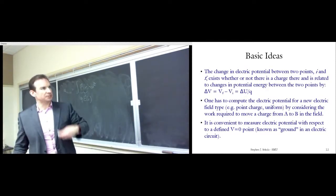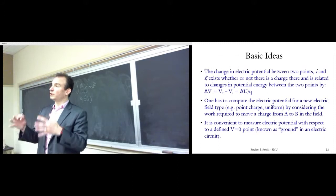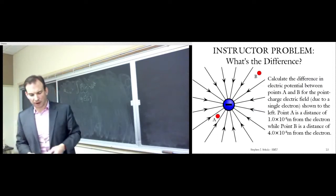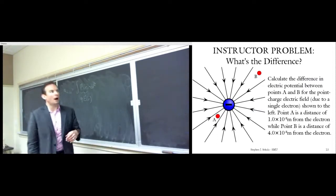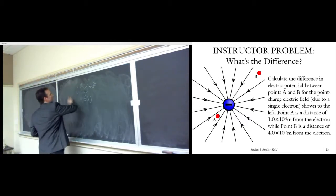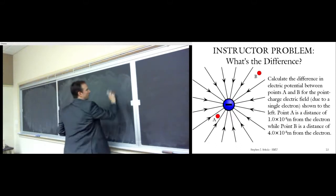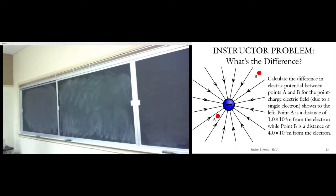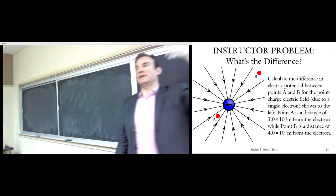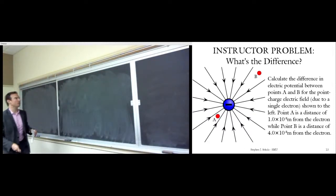For today, we're going to think about the zero point for point charges as being an infinite distance away from a point charge. Let's do an instructor problem: we're going to go back to our archetypal friend, the humble point charge — particularly a single electron — and probe its electric field using the electric potential concept. There is no other charge present in the problem, but we can think about the work per unit charge required to move from a point A to a point B in this point charge's electric field.